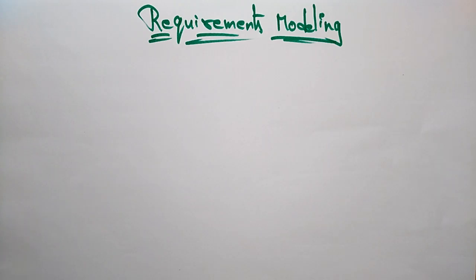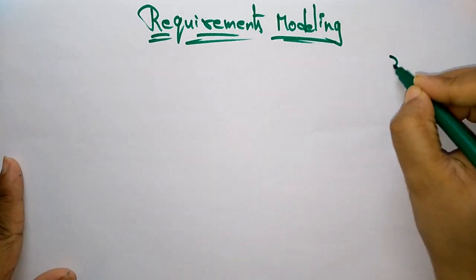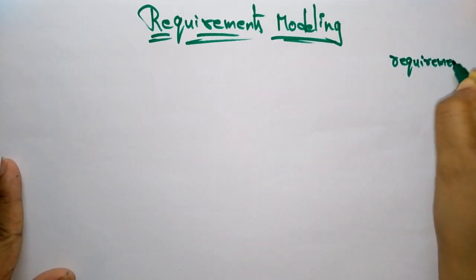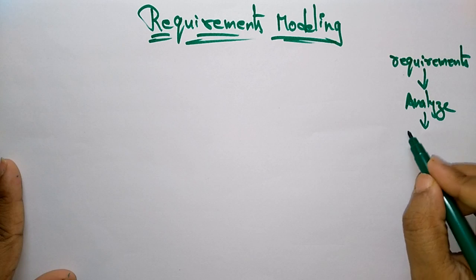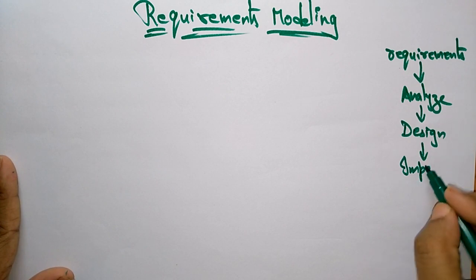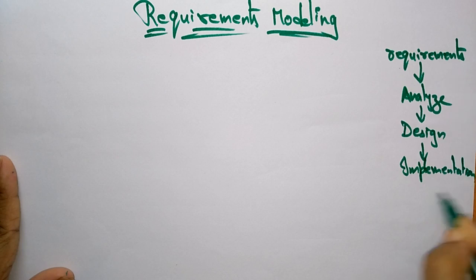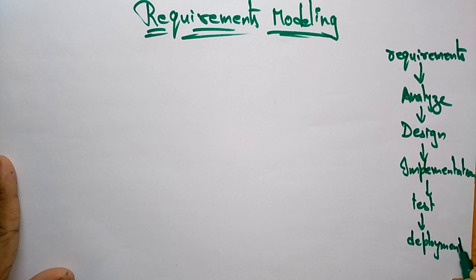Hi students, coming to the next topic: the requirements model. Whatever software product we are going to develop, first you need to gather the requirements, after that analyze them, after that start the design process. The stages are: requirements gathering, analyze the requirements, design, implementation, test, and deploy. These are the different stages we go through when developing any product.